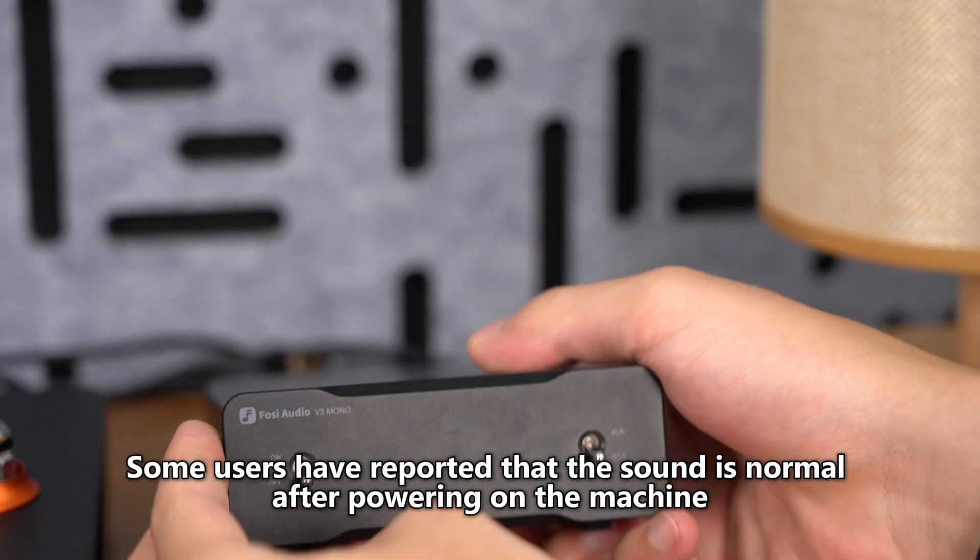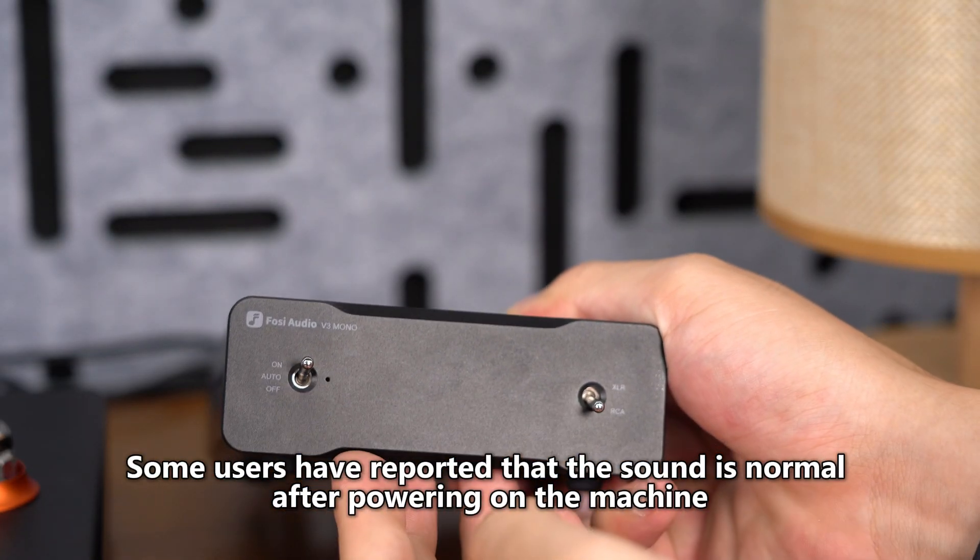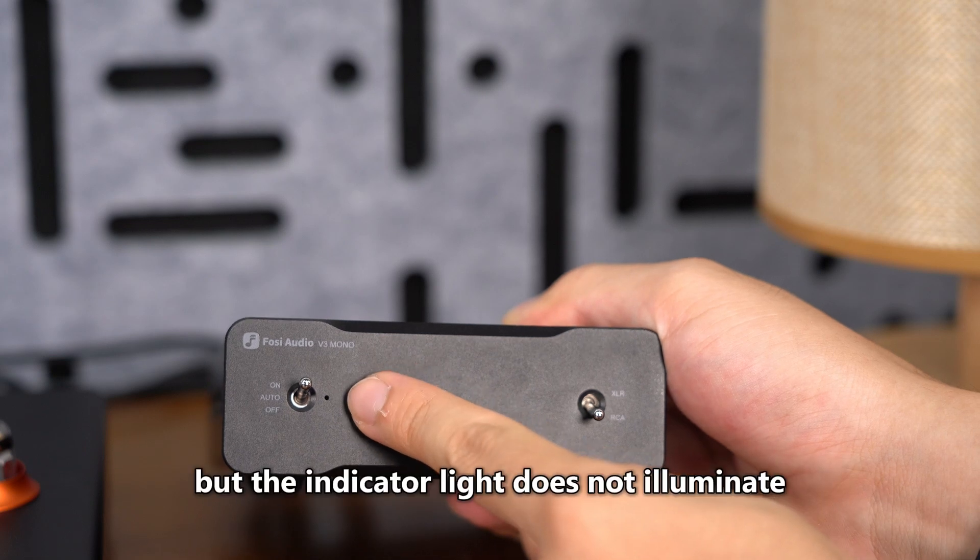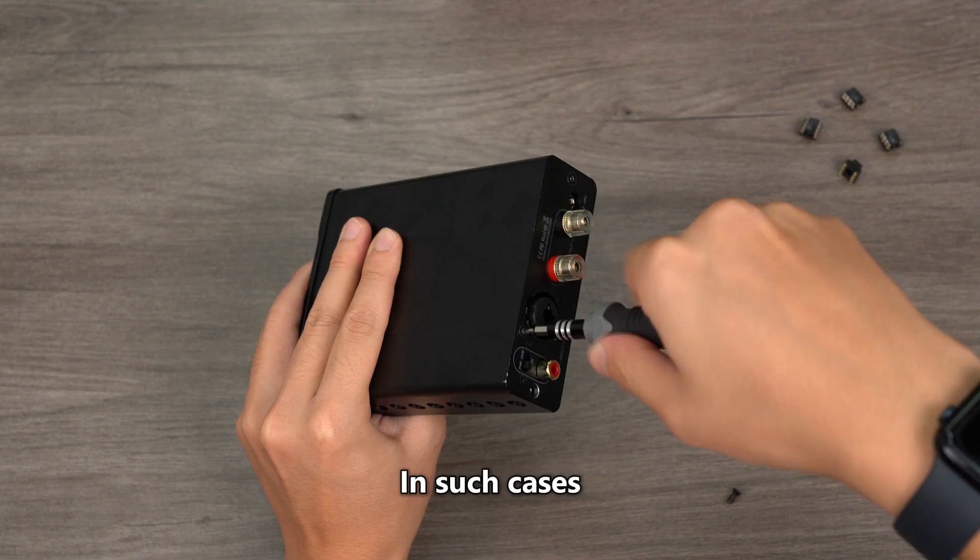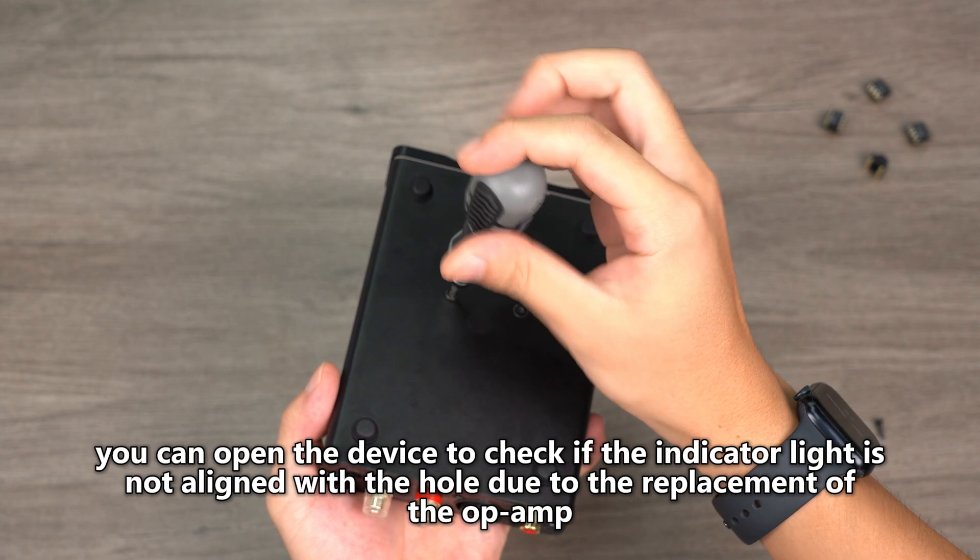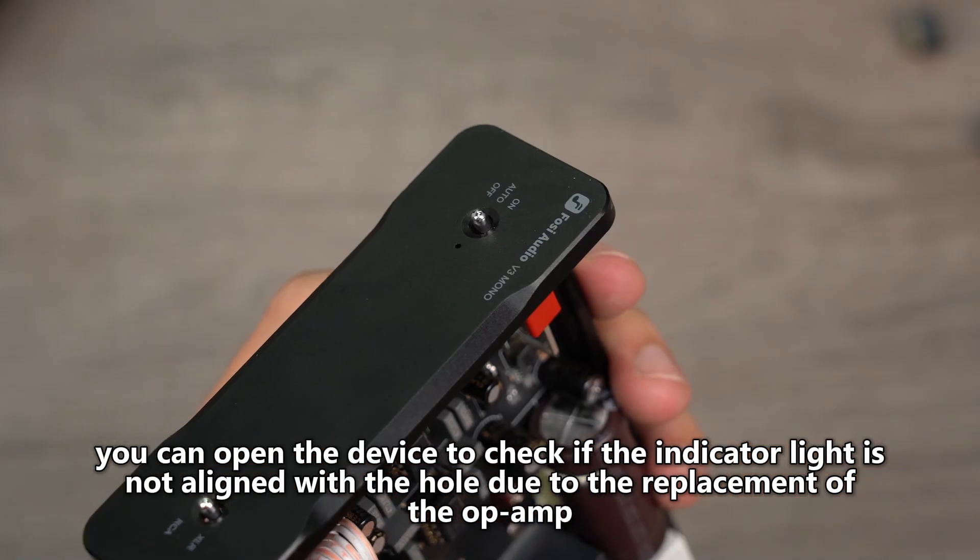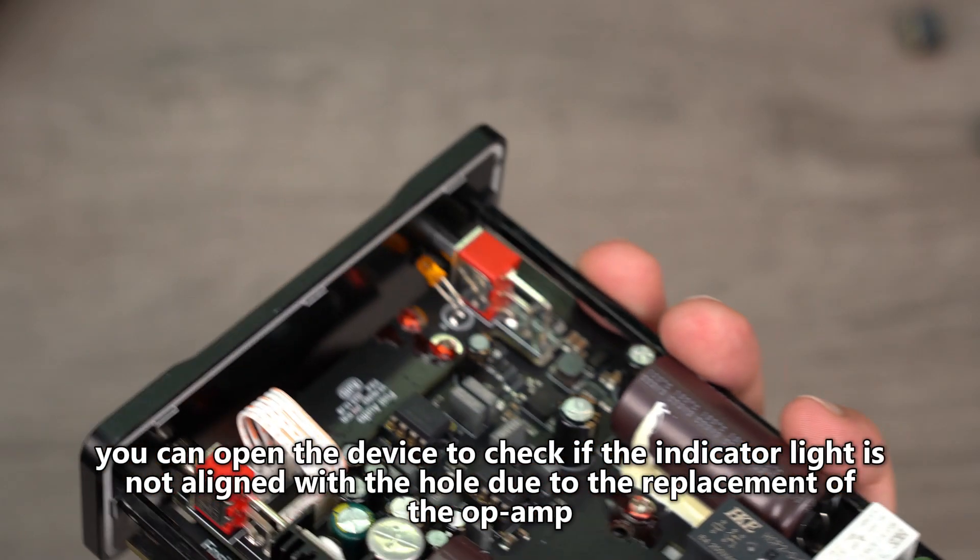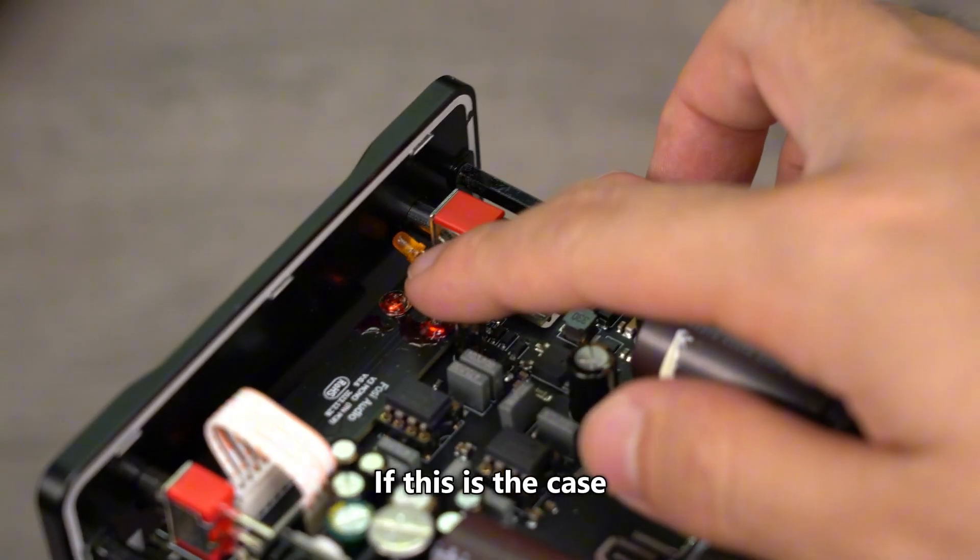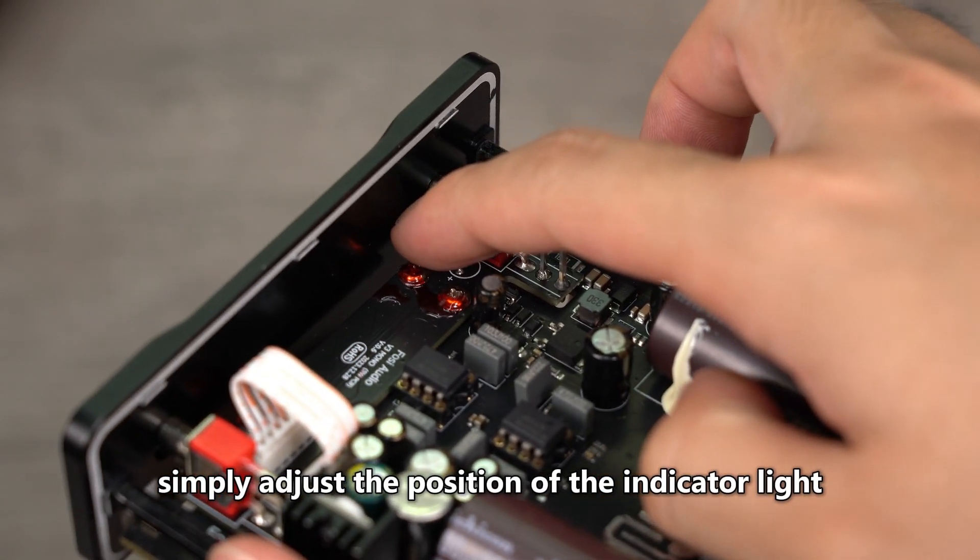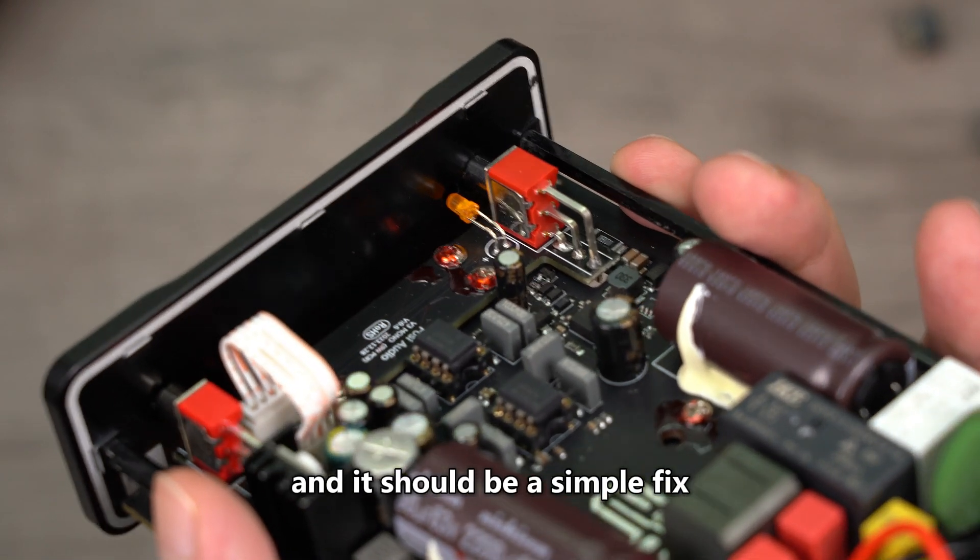Some users have reported that the sound is normal after powering on the machine, but the indicator light does not illuminate. In such cases, you can open the device to check if the indicator light is not aligned with the hole due to the replacement of the op-amp. If this is the case, simply adjust the position of the indicator light, and it should be a simple fix.